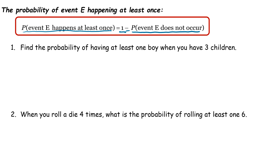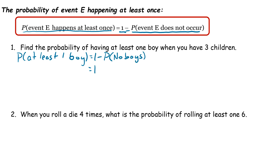Let's look at this first example: find the probability of having at least one boy when you have three children. So the probability of at least one boy — in order to do that, we're going to take 1 minus the probability of having no boys, which is the same thing as saying the probability of all girls. Since we're talking about three children, it's the probability of having three girls.